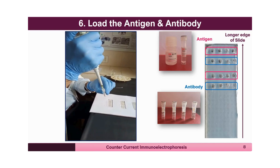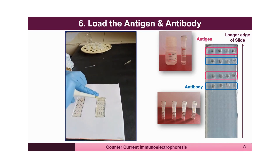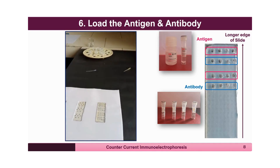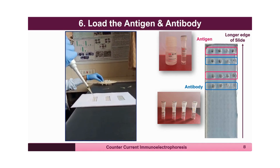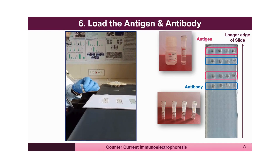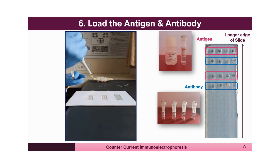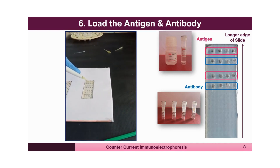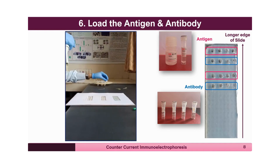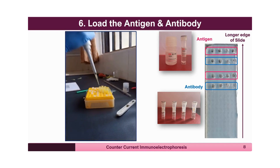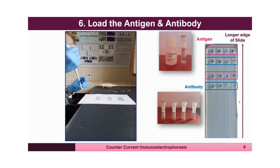In unknown samples, if the antigen is not present there will be no precipitin band formed. But in the control well, because you have loaded known antigen and antibody, a precipitin band must appear between the wells, indicating that the electrophoresis has run properly. Otherwise, if all samples are negative for the antigen and no control is loaded, the entire slide will show no precipitin band, causing confusion about whether electrophoresis took place. To avoid this, always load a known antigen and known antibody in the dedicated control well.